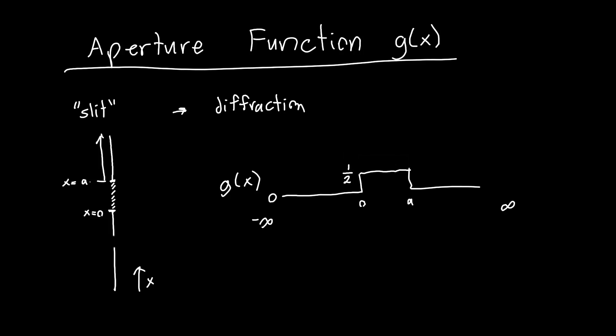In general we can let in however much light we want, and there's no reason we have to have just one slit. We could have another slit, and maybe this slit is totally transparent. So this is maybe x equals minus a prime, and x equals minus a prime prime. Then maybe we've got another slit here that transmits all the light.